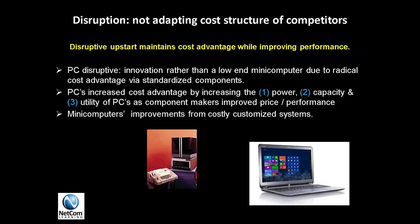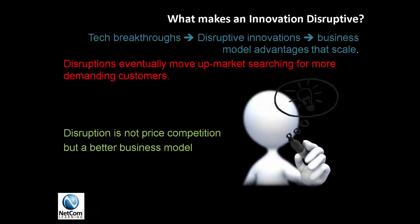A disruption is not adopting the cost structure of the competitors. Disruptive upstarts maintain their cost advantage while improving performance. Personal computers were a disruption — they had a completely different business model. It was an innovation rather than a low-end computer, due to a radical cost advantage via standardized components. Through the years, PCs increased their cost advantage while simultaneously increasing power, capacity, and utility. This is what makes PCs a complete disruption to the mainframe computers that existed in the 60s and 70s.